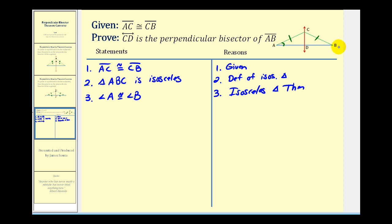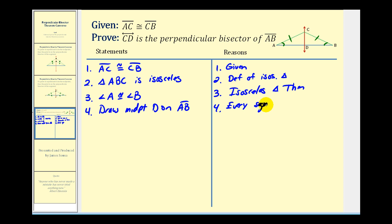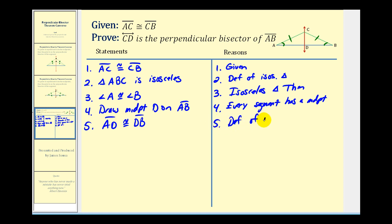Let's go ahead and mark that. For step 4, we'll draw the midpoint. If we define D as the midpoint, we know segment AD would be congruent to segment DB. This is by definition of a midpoint.